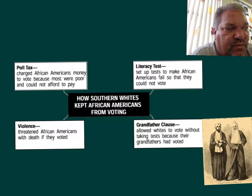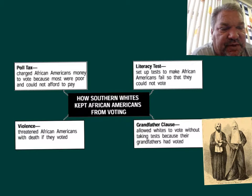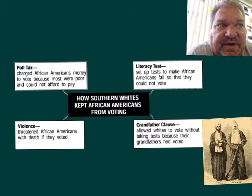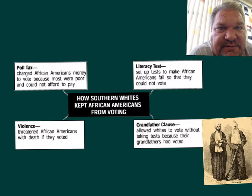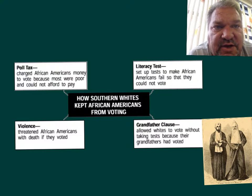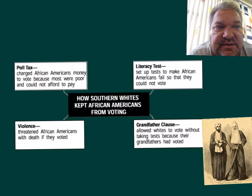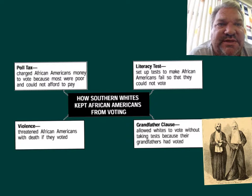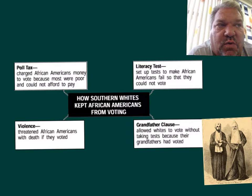So why did they have Jim Crow Laws? They really started because of the amendments — the 13th, 14th, and 15th Amendment, our ABV. The A was abolish slavery, the B was if you were born here you were a citizen, and the V was voting rights. It gave African Americans voting rights. So who didn't want African Americans to vote? The Southern whites — they did not want them to vote.